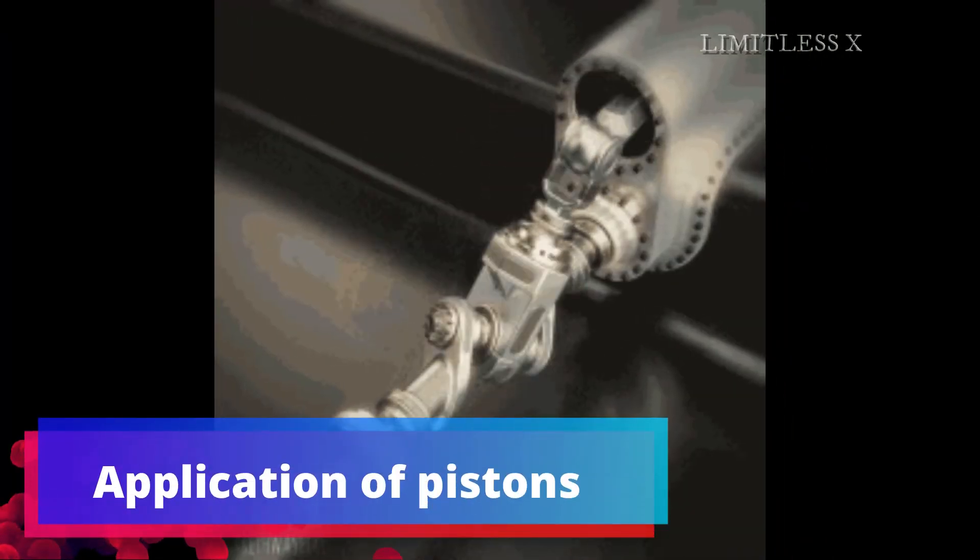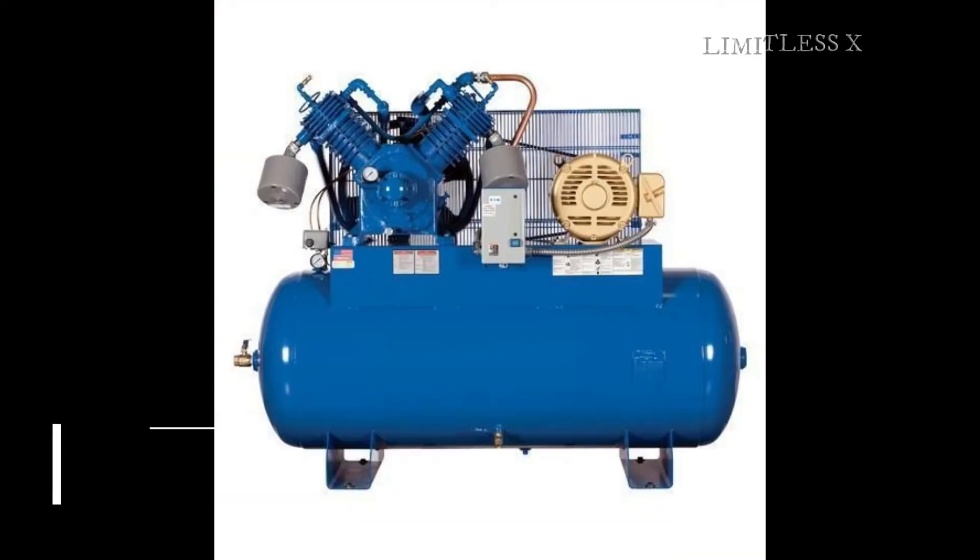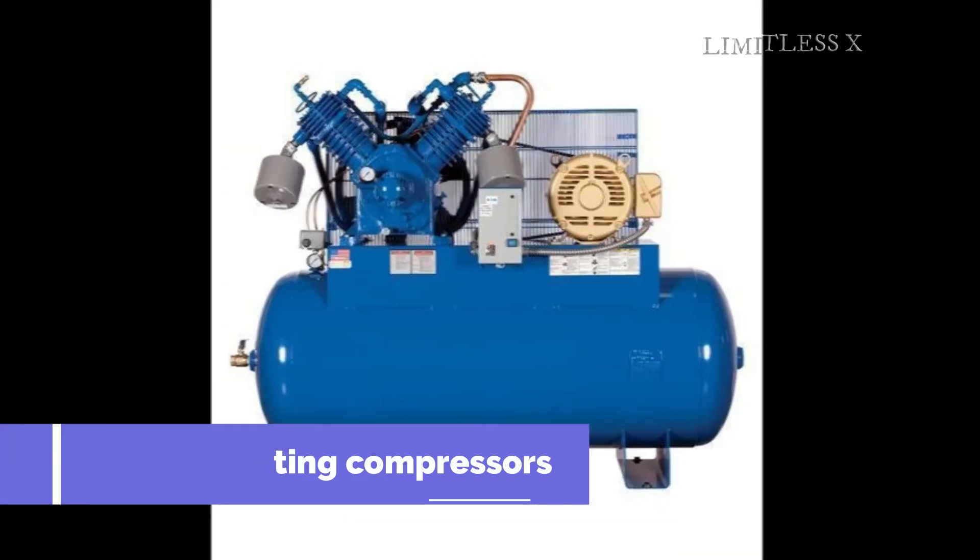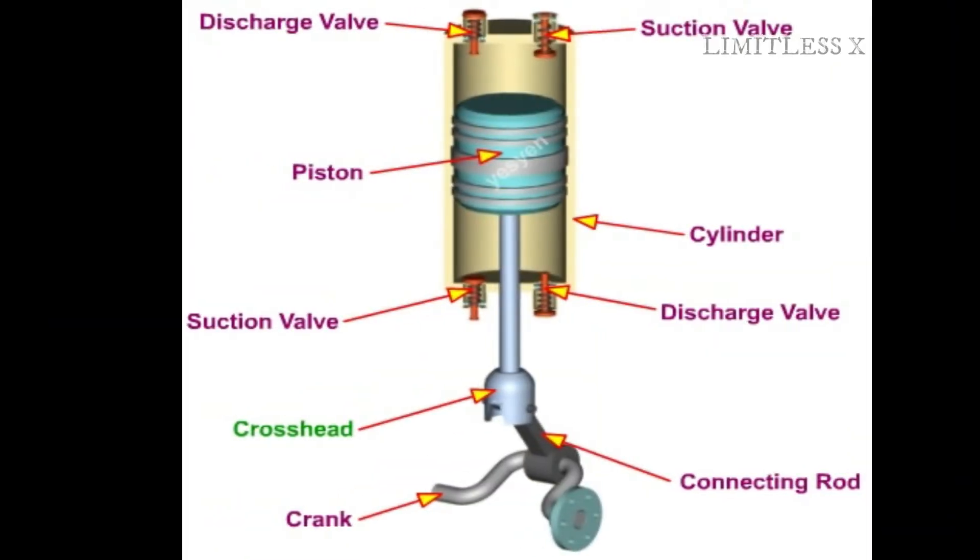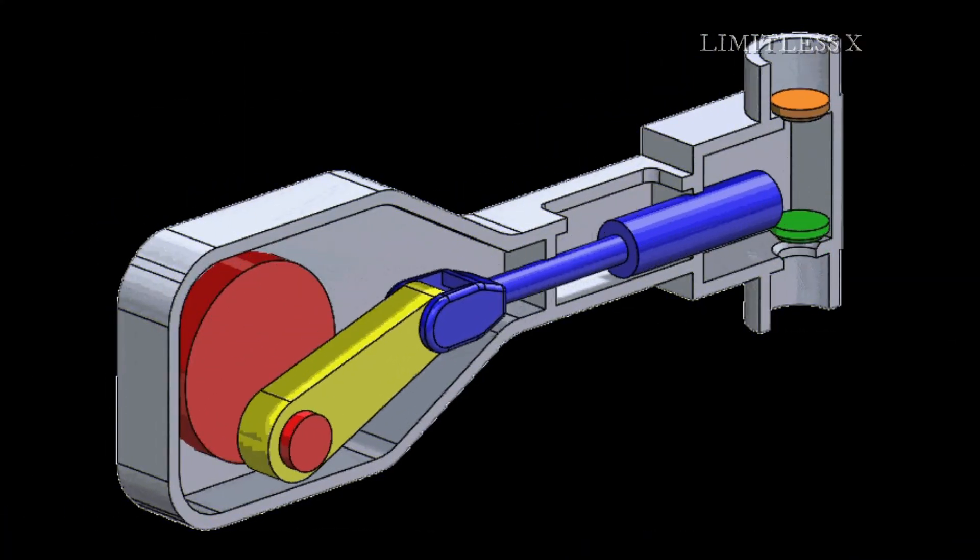Application of pistons. 1. Reciprocating compressors. These devices induct gases at low pressure and eject them at a higher pressure, utilizing mechanical power from a crankshaft connected to an external power supply. Reciprocating compressors are two-stroke. The return stroke draws in air at low pressure, while the forward stroke compresses it and pushes it out of the cylinder at high pressure. Compressors therefore impart motion to fluids.